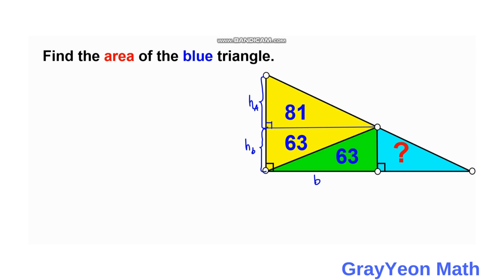Notice that we can actually compare this triangle here and this triangle here and get a relationship between h_A and h_B. For the triangle at the yellow, we have 81 is equal to one half times the base which is B, times h_A. And the other is 63 equal to one half times base B times h_B.